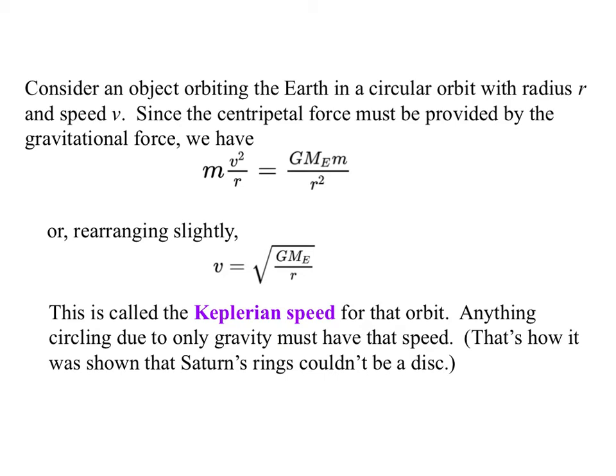Anything circling due only to gravity will have that speed. This is historically how Huygens was able to show that the rings of Saturn were not the disks of Saturn. People had, it was unclear in early telescopes whether they were actually rings or whether they were solid bands. And Huygens was able to show that they did not, parts of them did not move at the right velocities. And therefore, they were non-Keplerian, or they moved according to Keplerian curve, so they were not solid.